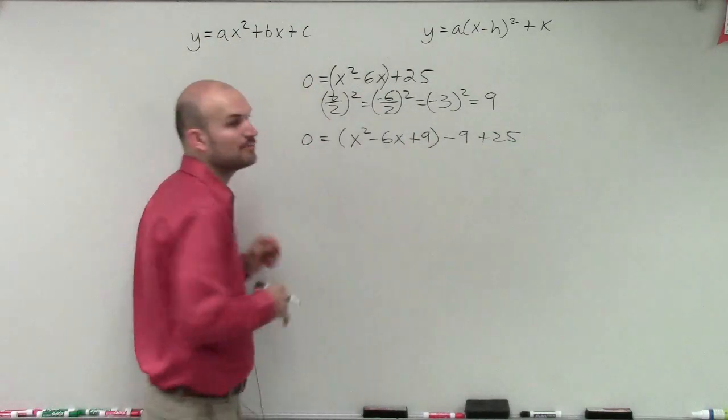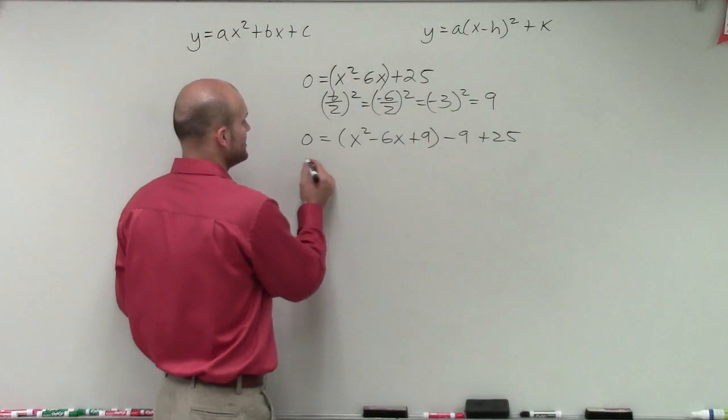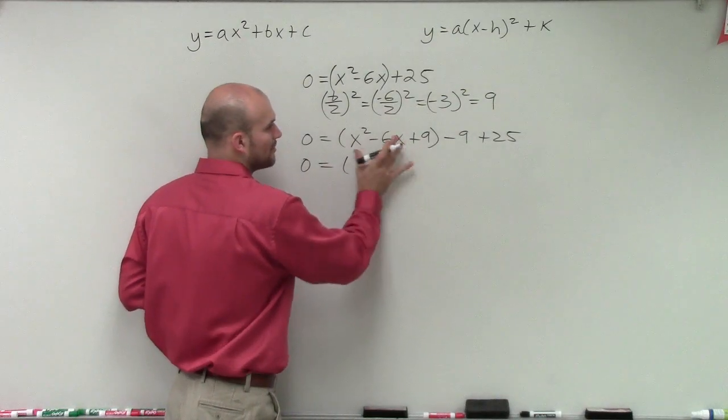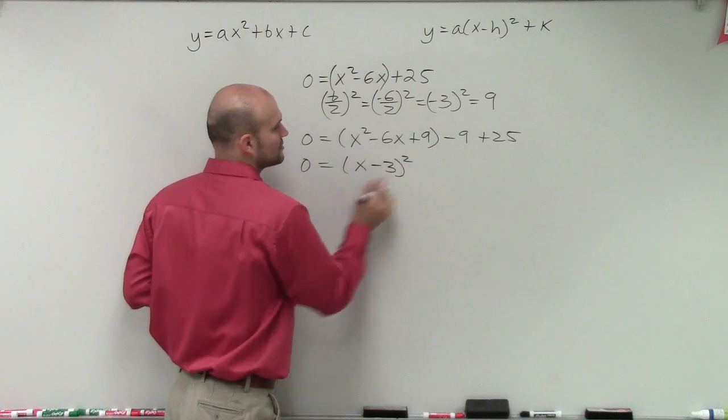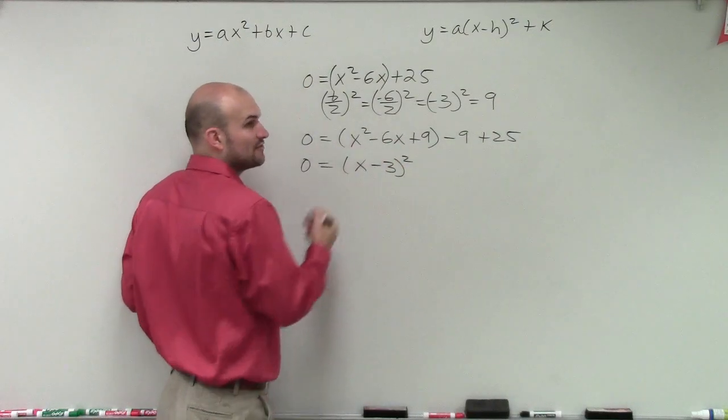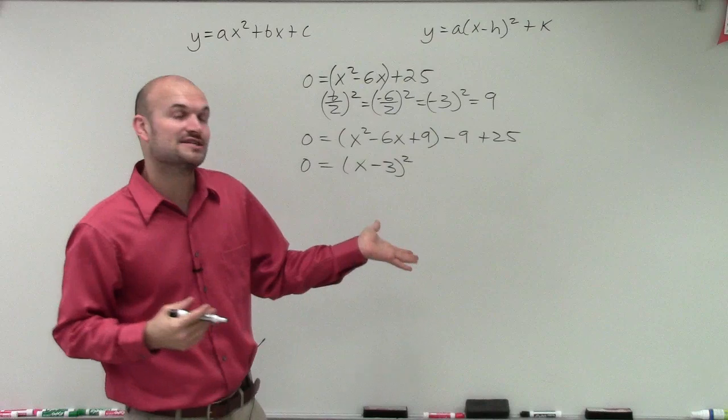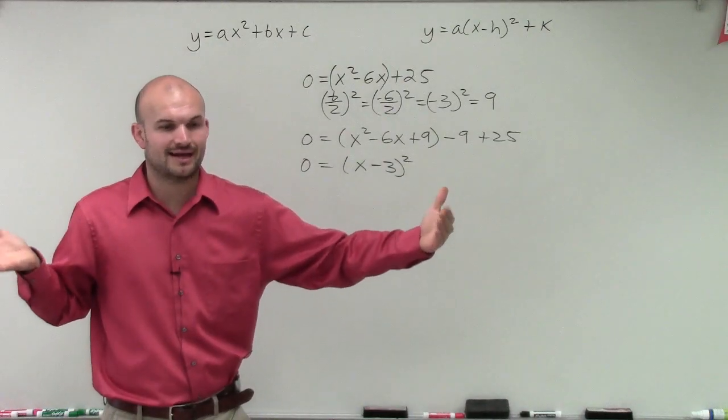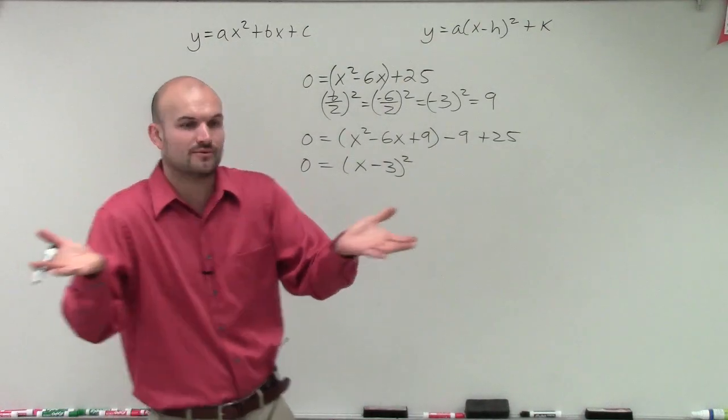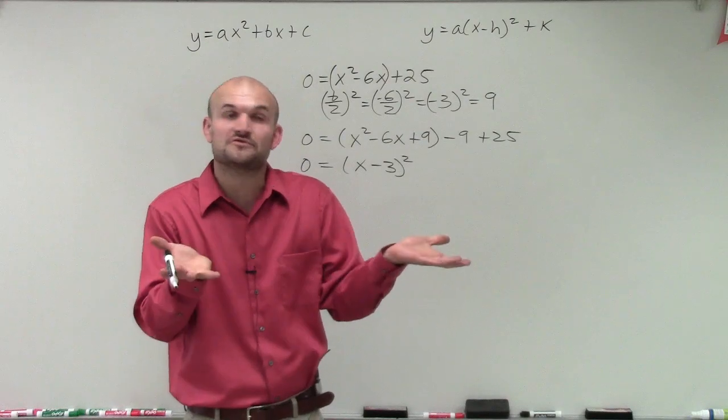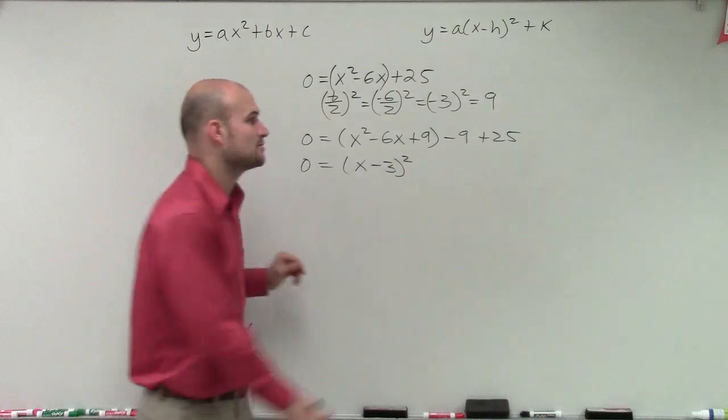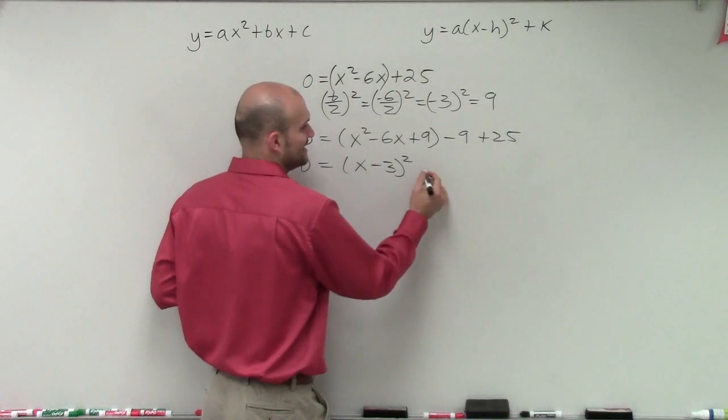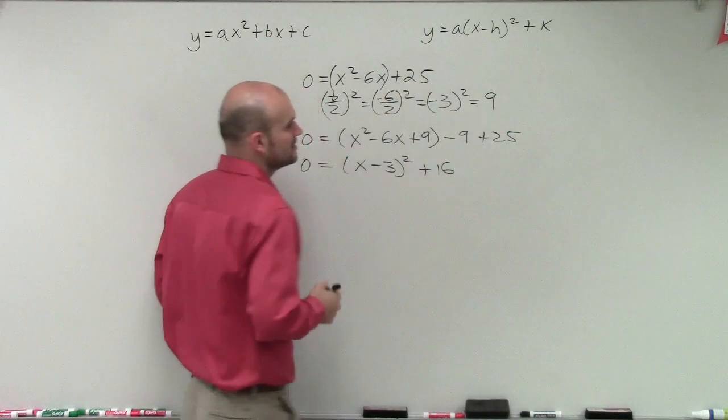So now that this is a perfect square trinomial, I can rewrite this as a binomial squared. So what I'm going to do is I'm going to factor this down to x minus 3 squared. This is really factored form as x minus 3 times x minus 3. Well, when an expression is multiplied by itself, just like when 5 times 5 is the same thing as 5 squared. So x minus 3 times x minus 3 is the same thing as x minus 3 squared.